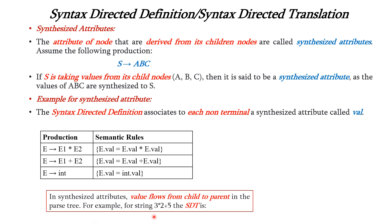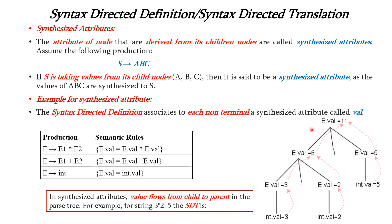Now let us consider the input string 3 into 2 plus 5 and frame the parse tree. E dot val is represented as E plus E according to rule number 2, and this E can be represented as E into E according to rule number 1. This E can be represented as integer according to rule number 3. So every E is represented as integer. The integers here are 3, 2, and 5. If we see the leaf nodes, we can see the given input string: 3 into 2 plus 5.